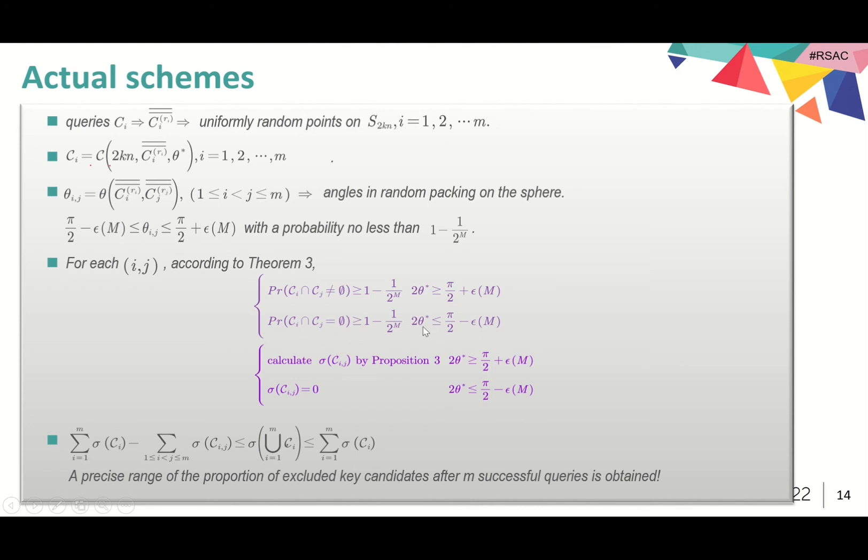On the other hand, if 2 theta star is smaller than pi over 2 minus epsilon_m, with similar probability, they will be disjoint and sigma will be 0. Then, we can get a range of the proportion of key candidates that can be excluded after m successful queries.